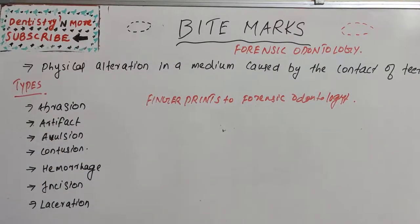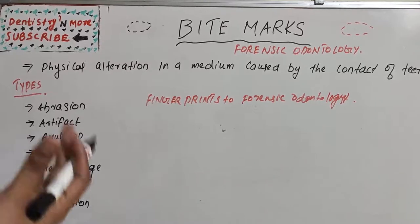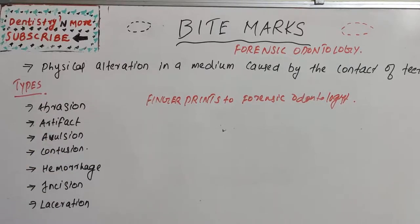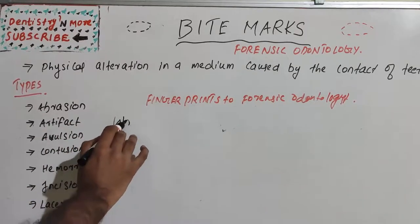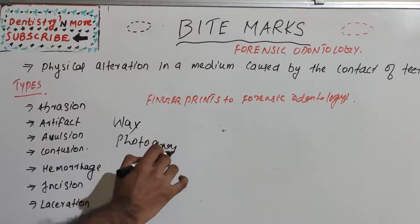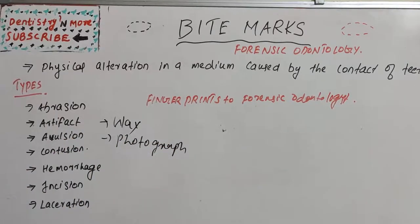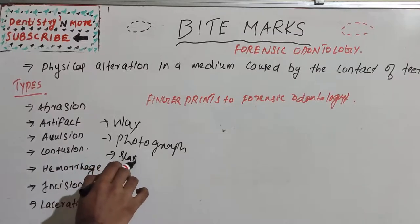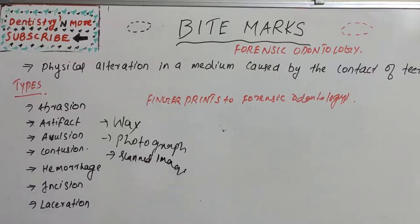Bites on human tissues may be observed in violent incidents where the attacker bites the victim, or the victim bites the attacker during a defense response. In fight situations and rape cases, these bite marks are very much vital to proving the case. Bite marks may also be observed in wax from a dental model, and indirectly from a photograph or a scanned image of a dental model.